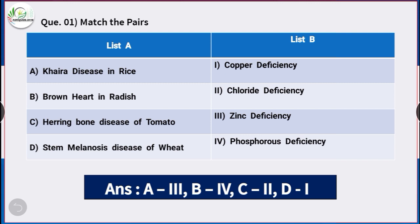Question number 1: Match the series. Kaira disease of rice is caused due to zinc deficiency. Brown heart disease in radish is caused due to phosphorus deficiency. Herring disease of tomato is caused due to chloride deficiency.